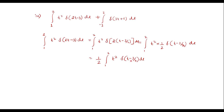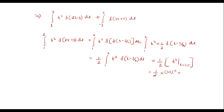Here δ(t − 3/2) exists only at t = 3/2 = 1.5. Since 1.5 is within the range 1 to 2, the function is defined at t = 1.5. So the value is (1/2)·t² evaluated at t = 1.5, which gives (1/2)·(1.5)² = (1/2)·2.25 = 1.125.